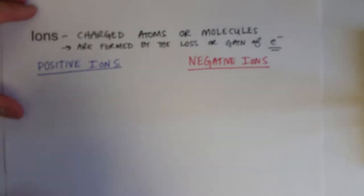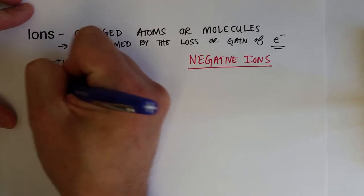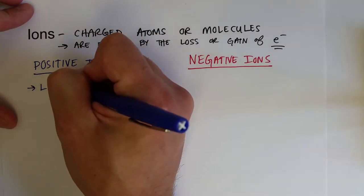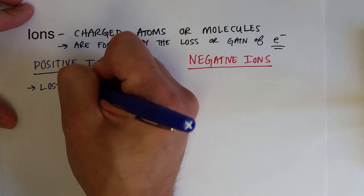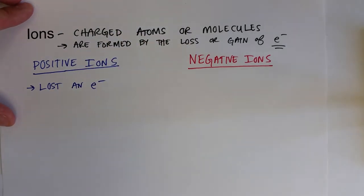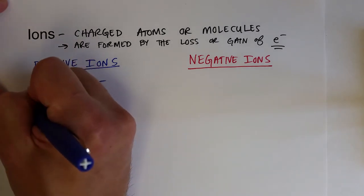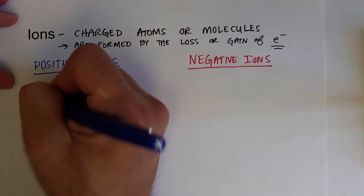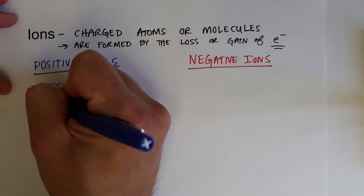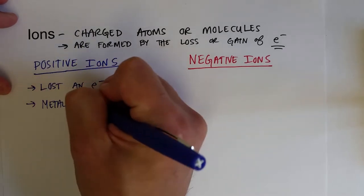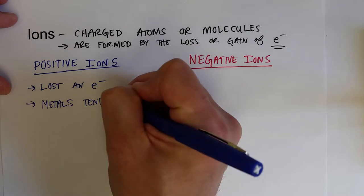So if you're a positive ion, that means you lost one or more electron. It turns out that metal atoms tend to lose electrons.